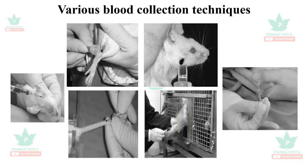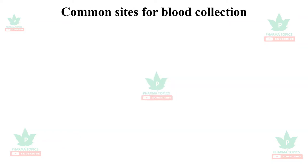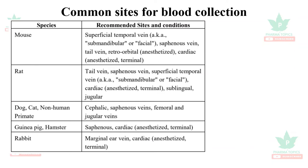Let us see the various blood collection techniques used for biochemical and hematological data recordings after drug administration. In case of mouse, common sites are the superficial temporal vein, saphenous vein, tail vein, retroorbital, or cardiac puncture. For rats, the same sites apply plus sublingual or jugular vein. For dogs, cats, and non-human primates, cephalic, saphenous, femoral, and jugular veins are used. For guinea pigs and hamsters, the saphenous vein or cardiac puncture is used; for rabbits, the marginal ear vein or terminal cardiac puncture with anesthesia.